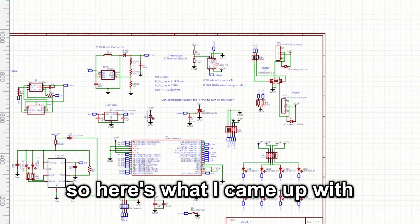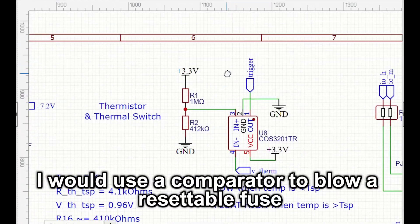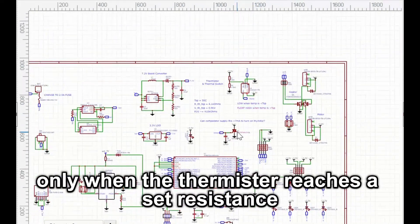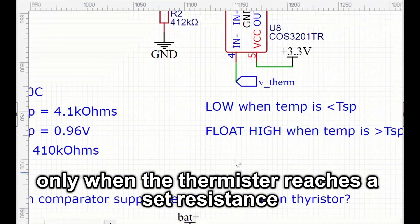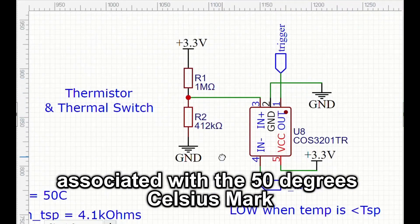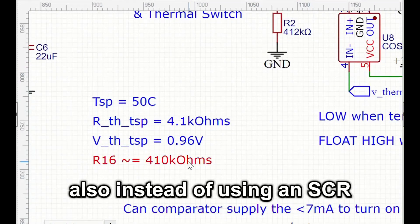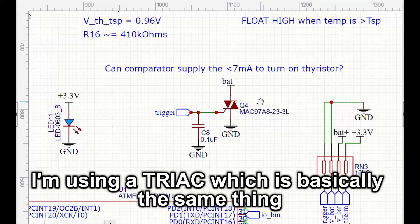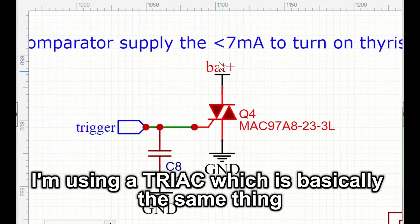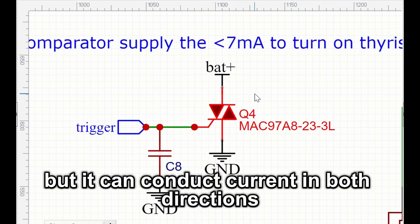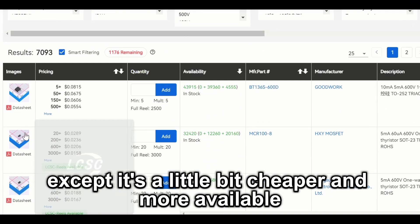So here's what I came up with. I would use a comparator to blow a resettable fuse only when the thermistor reaches a set resistance associated with the 50 degrees Celsius mark. Also, instead of using an SCR, I'm using a TRIAC, which is basically the same thing, but it can conduct current in both directions, except it's a little bit cheaper and more available.